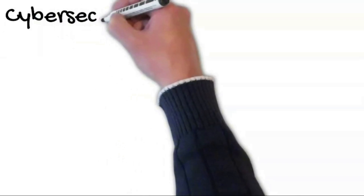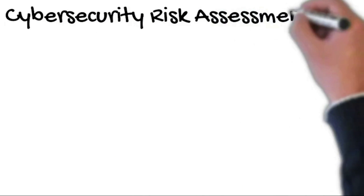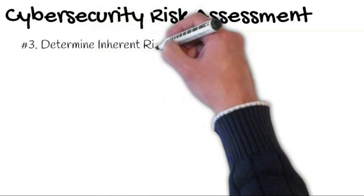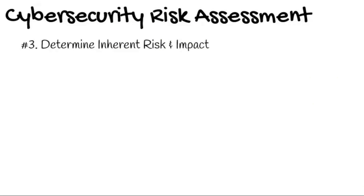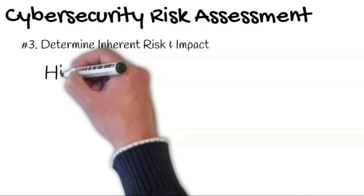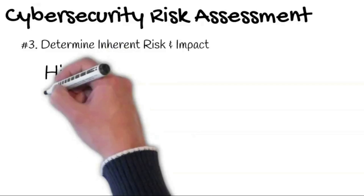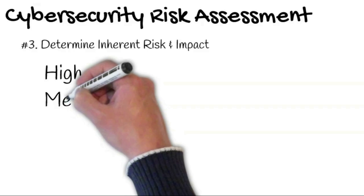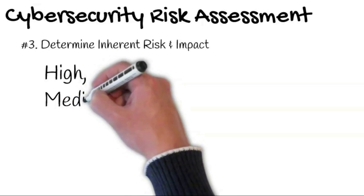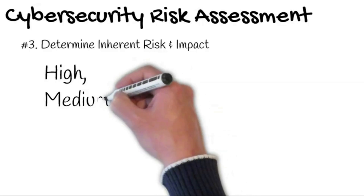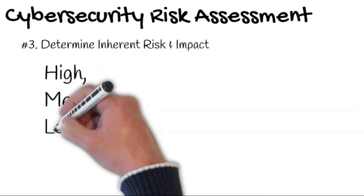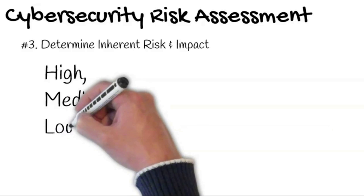The third step is to determine inherent risk and impact. This step is done without considering your control environment. Factoring in how you characterized the system, you determine the impact to your organization if the threat were exercised. Examples of impact ratings are: high impact could be substantial; medium impact would be damaging but recoverable and/or inconvenient; low impact would be minimal or non-existent.